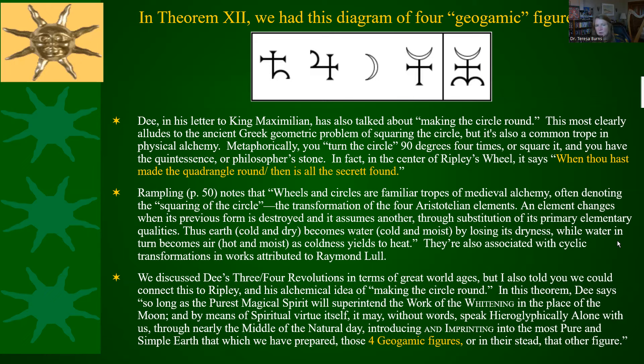We looked at Dee's three and four revolutions in terms of great world ages, but we can also connect it to Ripley and his alchemical idea of making the circle round. In this theorem, Dee says: 'So long as the purest magical spirit will superintend the work of the whitening in the place of the moon, and by means of spiritual virtue itself, it may without words speak hieroglyphically alone with us, through nearly the middle of the natural day, introducing and imprinting into the most pure and simple earth that which we have prepared — those four geogamic figures, these, or in their stead, that other figure.'